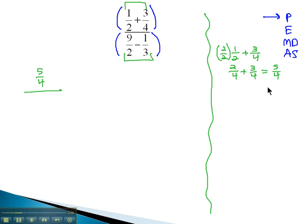The denominator, nine-halves minus one-third. The common denominator we have there is six, so we'll multiply by three over three on the first fraction, and by two over two on the second fraction to give us twenty-seven-sixths minus two-sixths, which is twenty-five-sixths.